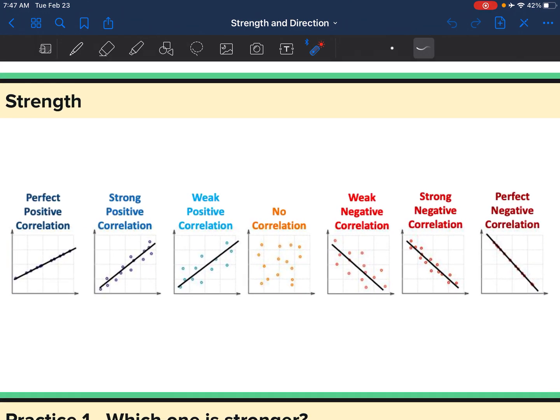And of course, we have the same thing for negative: weak, strong, and perfect.